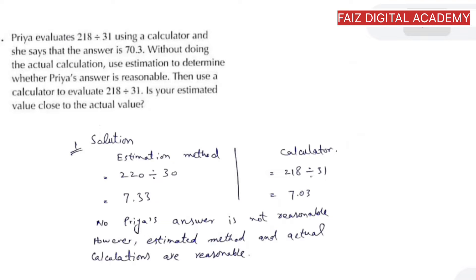Question one states that Priya evaluates 218 divided by 31 using a calculator and she says that the answer is 70.3. Without doing the actual calculation, use estimation to determine whether Priya's answer is reasonable. Then use a calculator to evaluate 218 divided by 31. Is your estimate value close to the actual value?